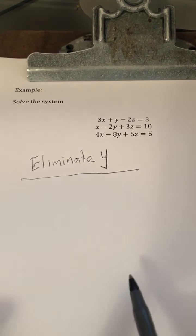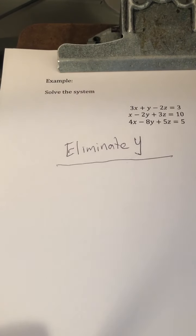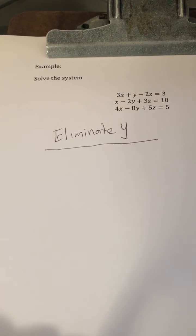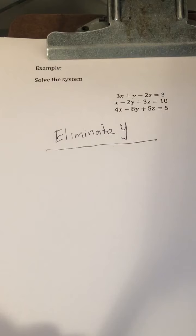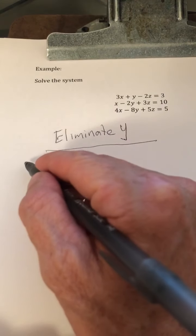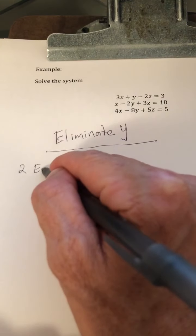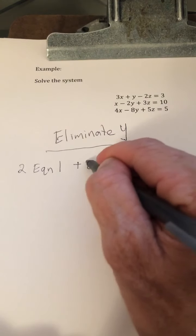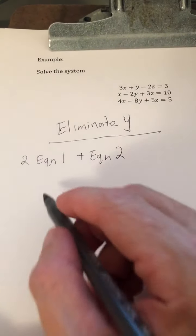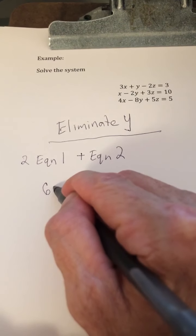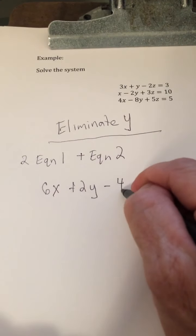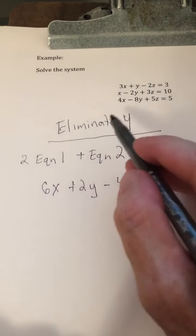Now that we've decided on eliminating y, we have to take the steps to make that happen. So we're going to combine these equations in such a way that the coefficients of y become equal but opposite. Notice that if I multiply equation 1 by 2, the coefficients of y will be 2 and negative 2, and that's good. So one thing we're going to do is 2 times equation 1 plus equation 2. 2 times equation 1 is 6x plus 2y minus 4z equals 6. Notice that I'm multiplying both sides of equation 1 by 2.